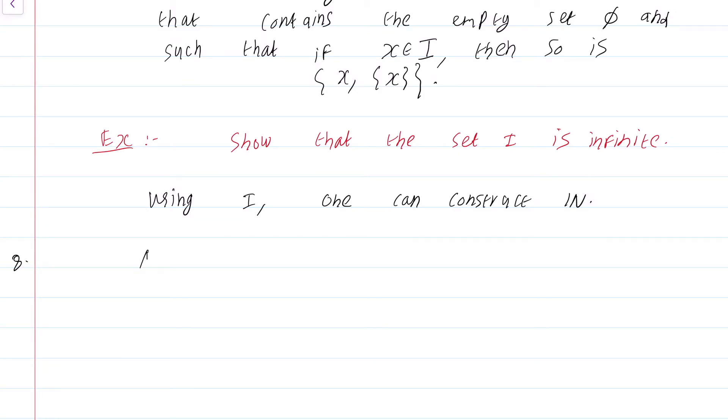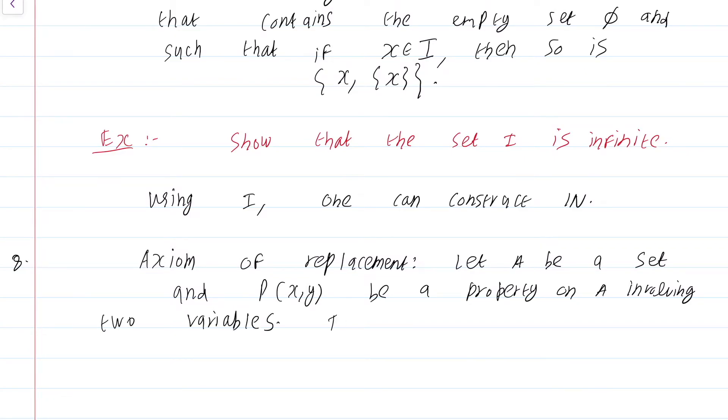Now, we come to the final few axioms, axiom of replacement. As we go deeper and deeper into this, the axioms become more and more complicated and less and less relevant to this course. This axiom, I am not even sure whether I will ever use this axiom in this course, but many sets I will define and I will be tacitly using them without my knowledge. So, let a be a set and p of x, y be a property on a involving two variables.